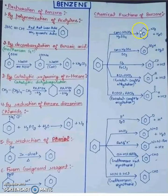So let us start with the preparation of benzene. First, by polymerization of acetylene. You can see this acetylene, red hot copper tube, this is your benzene.